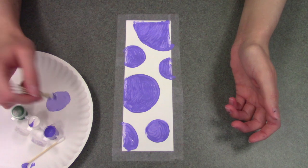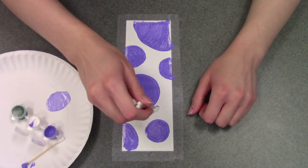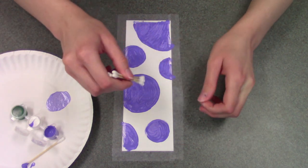And then you're going to dab into the lighter shade of purple and then kind of dab around the purple circles that you have.